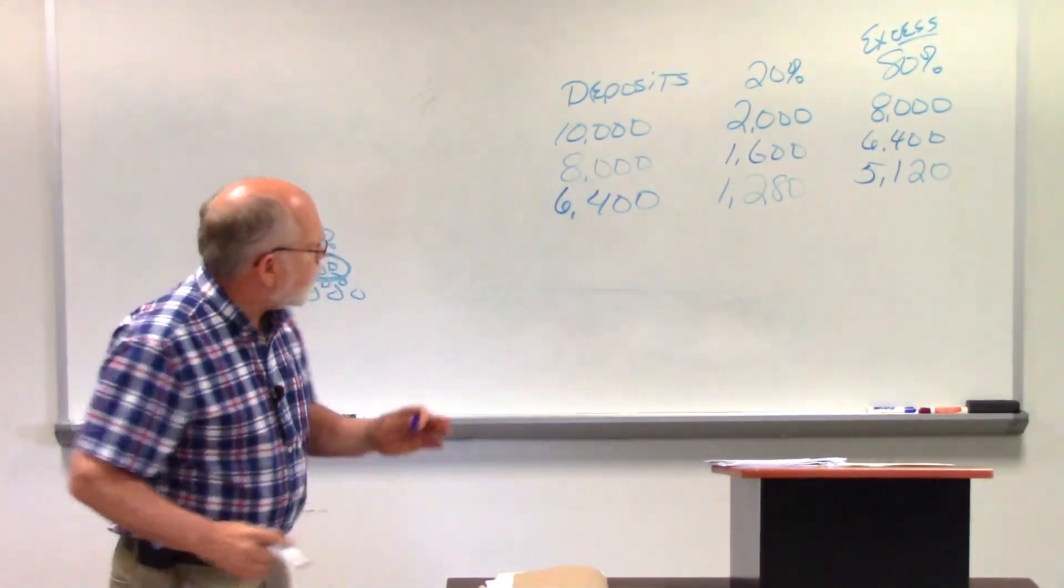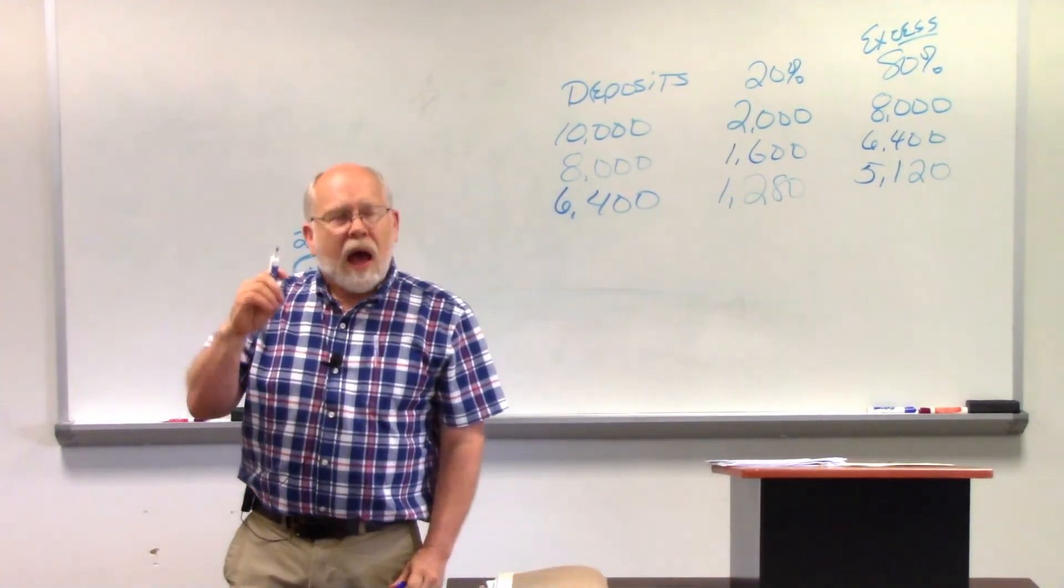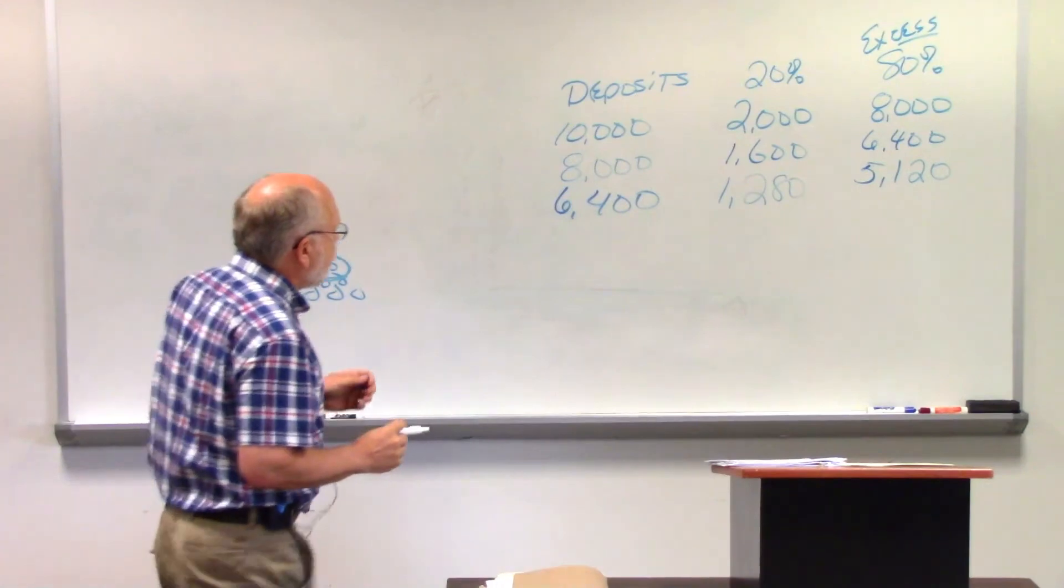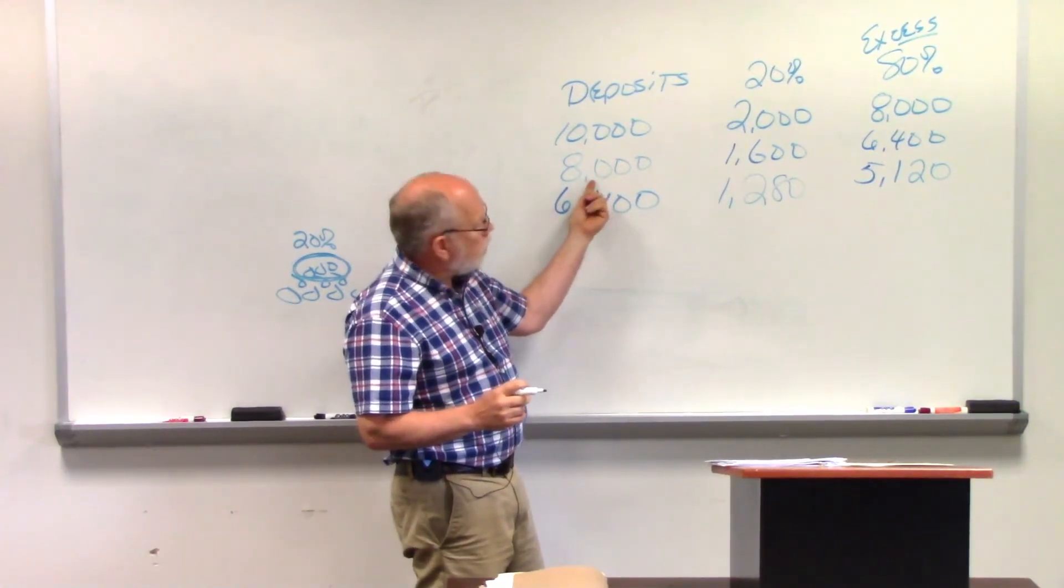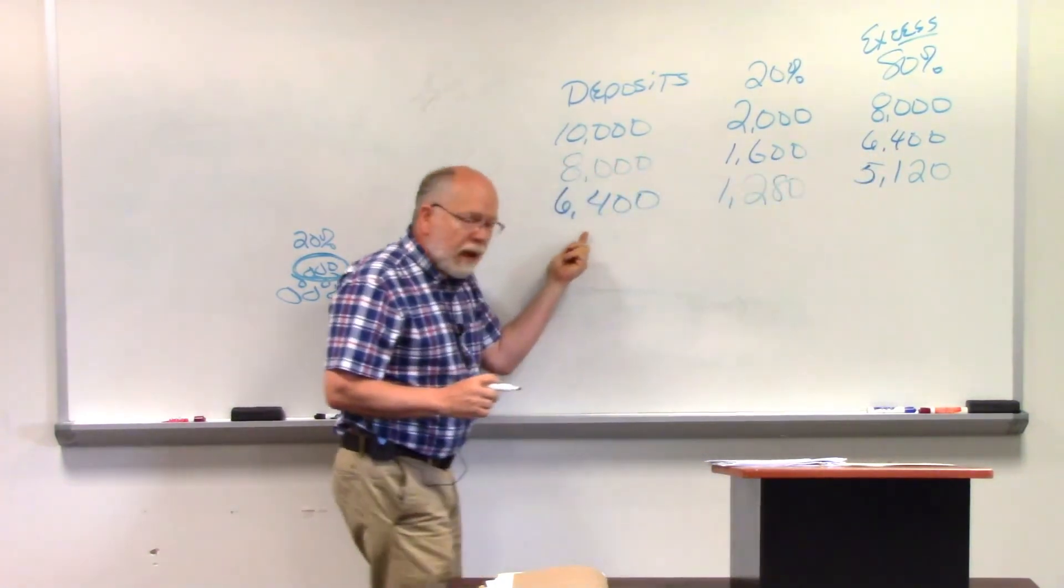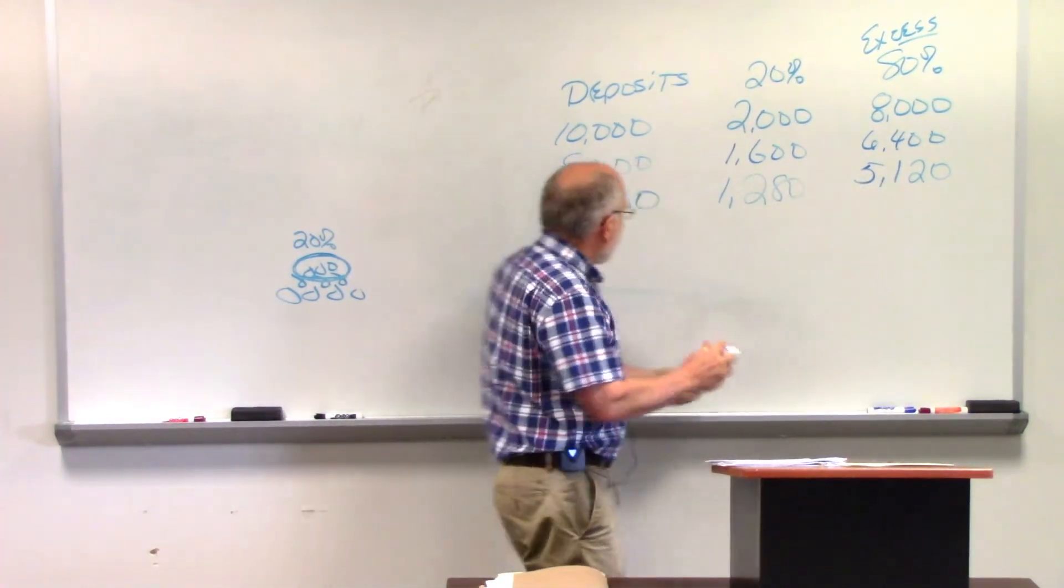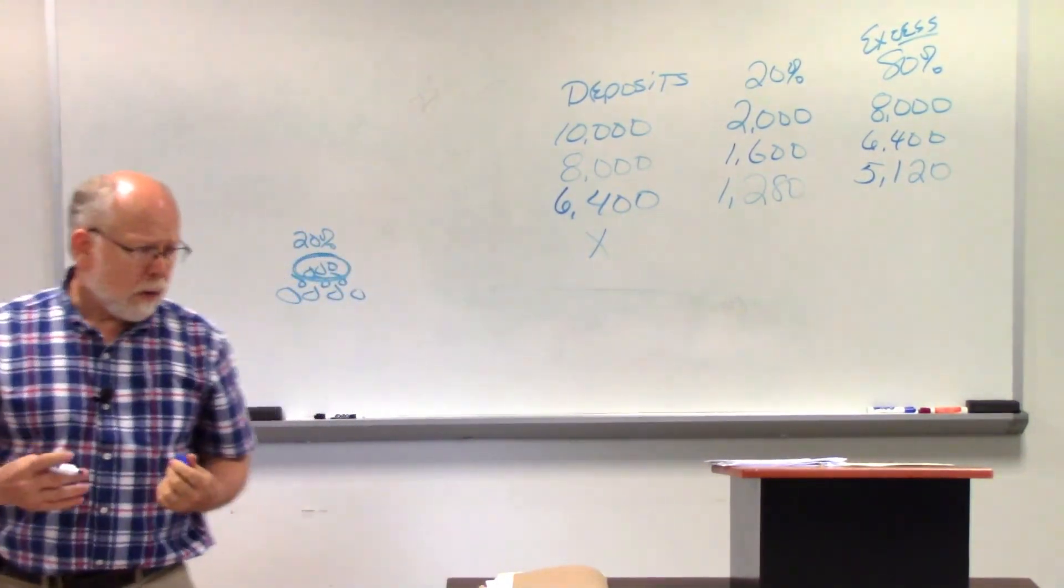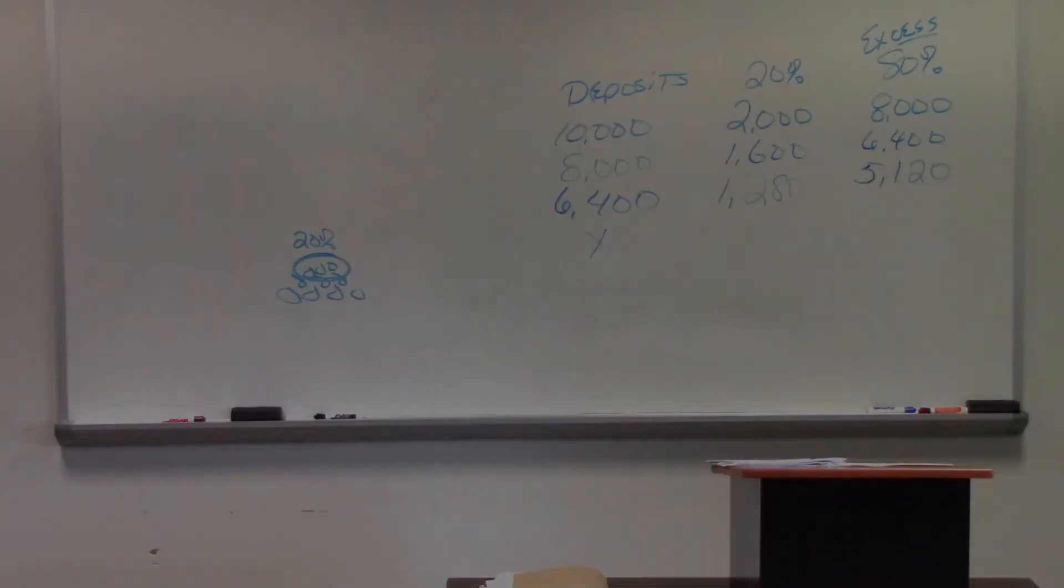We're going to continue this process a couple more times just to see how does it all end and can this go on forever? Can we continue this process of having excess reserves, loaning it out, putting it back in the vault, keeping some reserves, loaning out the balance, getting a brand new deposit, keeping 20% in the back of the vault, having 80% excess, and making another loan here? How long can this game go on? That is what we're going to talk about when we pick up in the next session of our tutorials. Let's take a look at the next section.